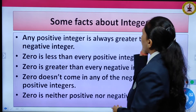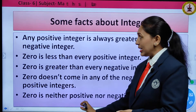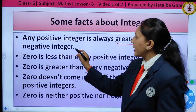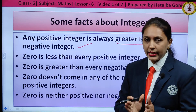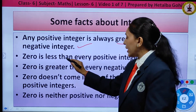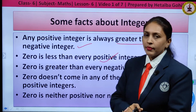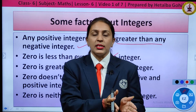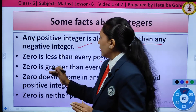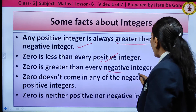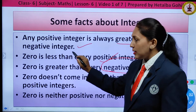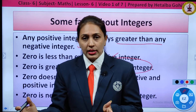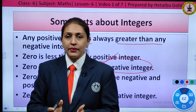Some facts about integers. First, any positive integer is always greater than any negative integer. Second, zero is less than every positive integer — for example, 5 is greater than 0 because 5 is on the right side of zero. Third, zero is greater than every negative integer because zero lies on the right side of all negative integers. Therefore, zero is greater than all negative integers.